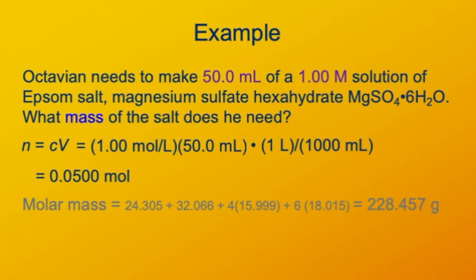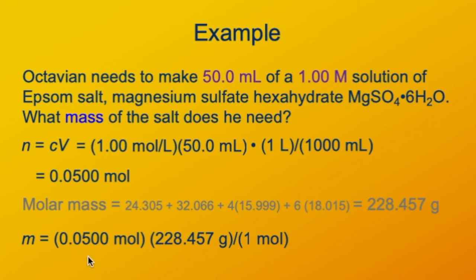Next, calculate the molar mass to convert moles of Epsom salt to grams. Magnesium is 24.305, sulfur is 32.066, four oxygen atoms contribute 4 × 15.999, and the six water molecules contribute 6 × 18.015, adding up to 228.457 grams per mole. Multiplying 0.05 moles by 228.457 grams per mole gives 11.42 grams. With three significant figures, the answer is 11.4 grams of Epsom salt.